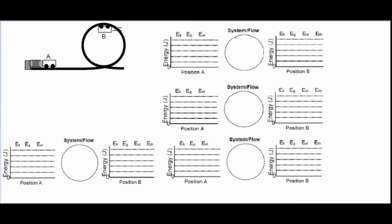First of all, we want to make sure we're aware of what questions to ask ourselves to determine how much of each type of energy we have. For EK, kinetic energy, we want to ask ourselves: is the object moving, and if so, how fast?